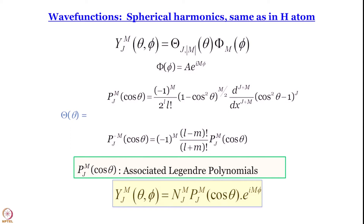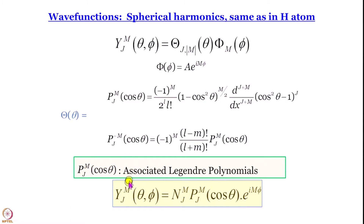The wave functions are essentially spherical harmonics — a product of a phi part and a theta part. The phi part is e^(imφ) multiplied by a constant, where m is 0, ±1, ±2 and so forth. m is the magnetic quantum number, and as we will see later it stands for the z-component of angular momentum. The theta part is essentially associated Legendre polynomials in cos θ — not in θ, not in x, y, z, but in cos θ.